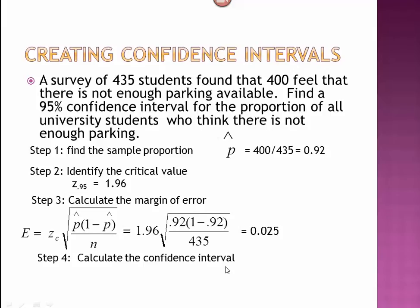Then we calculate the confidence interval. We take our 0.025, and we subtract it and add it to our point estimate, p-hat, of 0.92. Here's our confidence interval. With this, we can say with 95% confidence that we believe the population proportion is somewhere between 0.895 and 0.945.